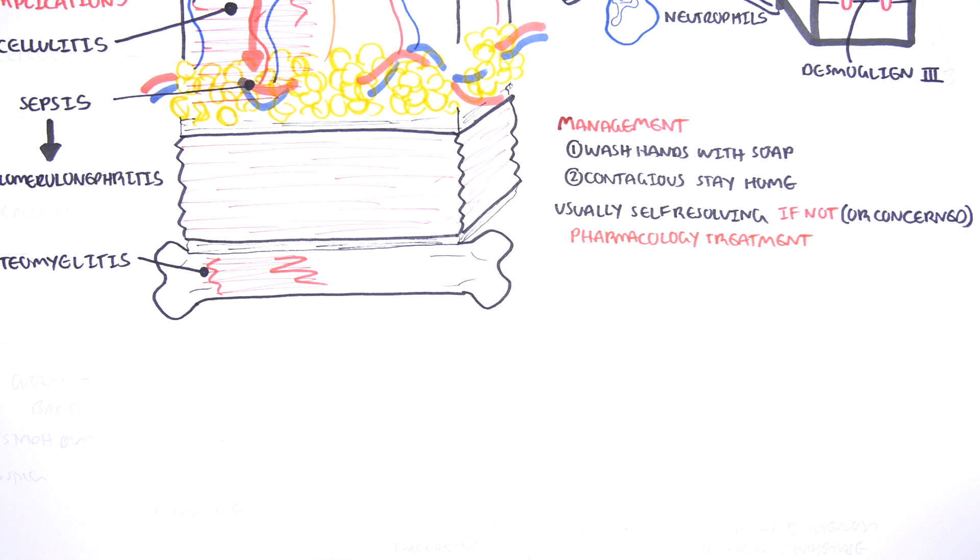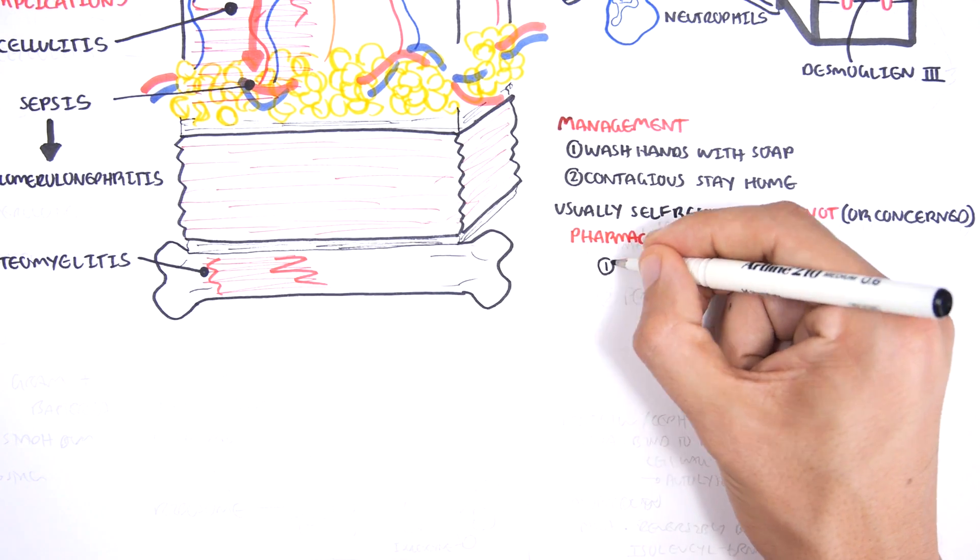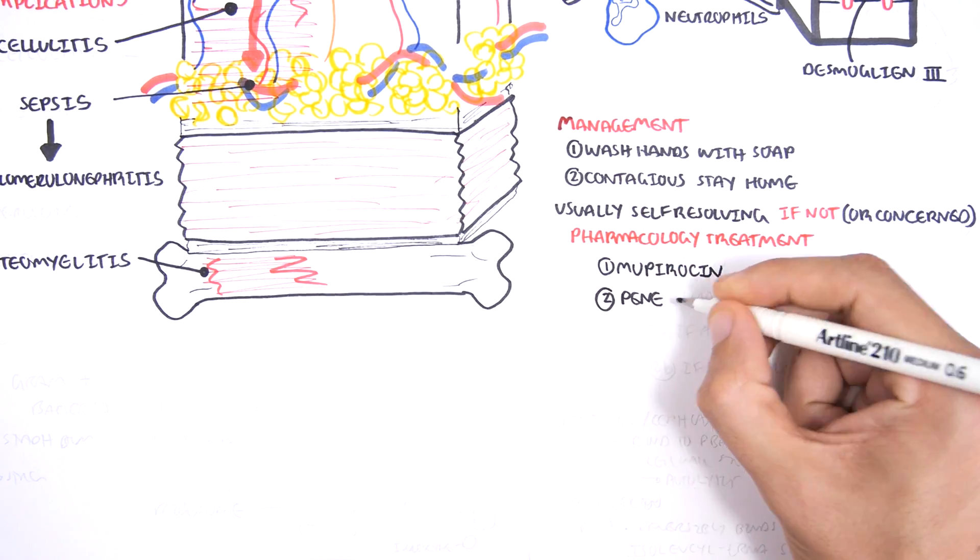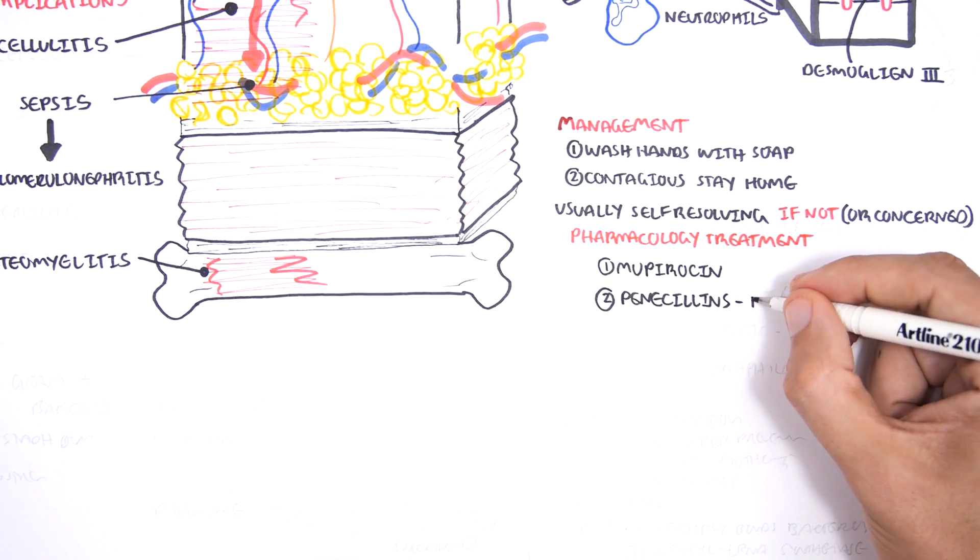However, if you are concerned or if it's worsening, antibiotics, which is pharmacological management, is used. First line is a topical antibiotic called mupirocin. Second line are penicillins, such as dicloxacillin and flucloxacillin.